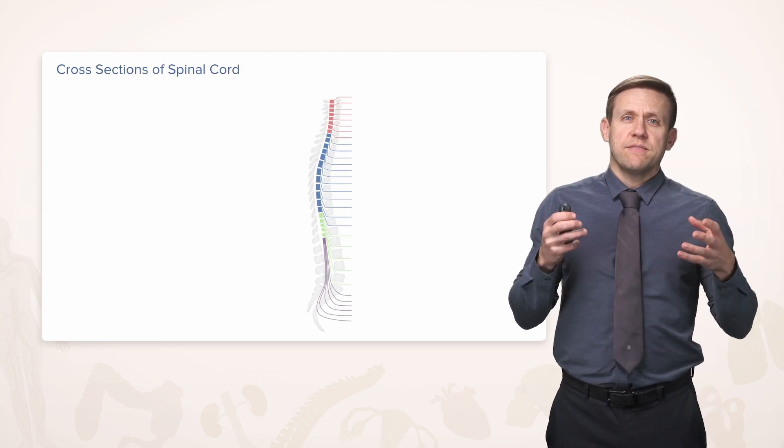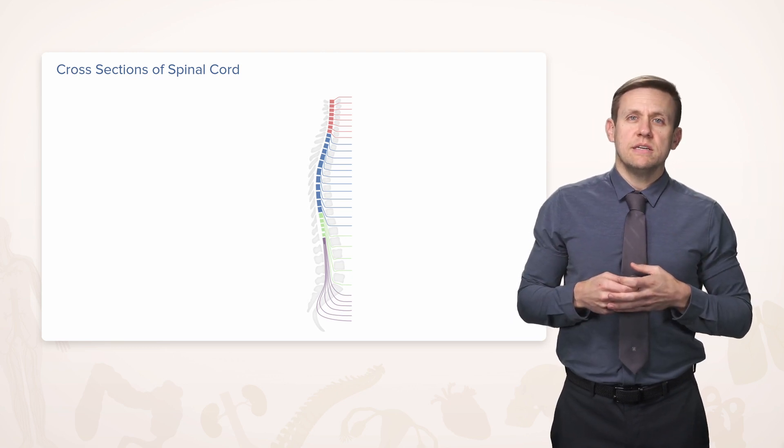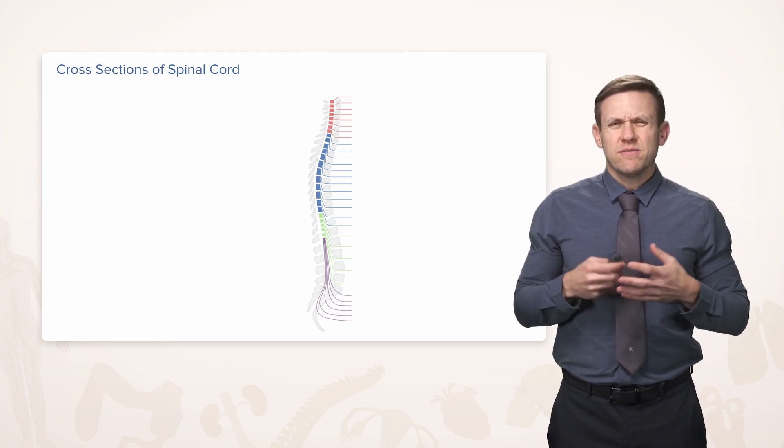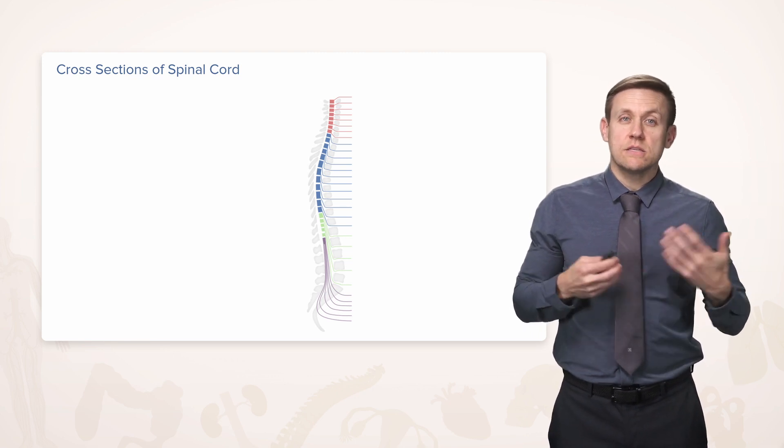Here we're going to look at the various parts of the spinal cord which correspond to the overlying vertebral body, very similar to the way lobes of the cerebrum corresponded to the overlying skull bones.